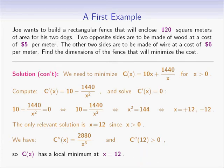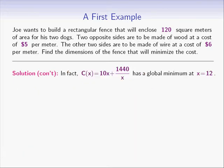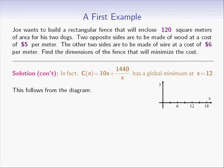But that is not the end of the story. When the question says minimize the cost, it means we need to find the global minimum, not just a local one. Fortunately, the local minimum at x equals 12 is also a global one. We can see this from a diagram: for positive x less than 12 the function is decreasing, and for x greater than 12 it increases, so x equals 12 corresponds to the lowest point on the graph.